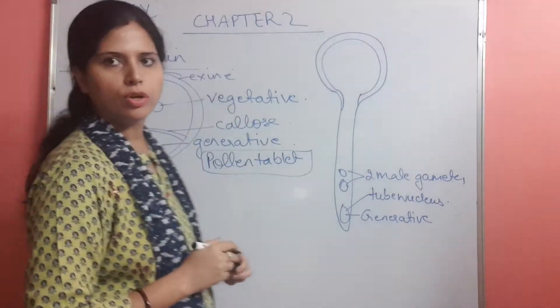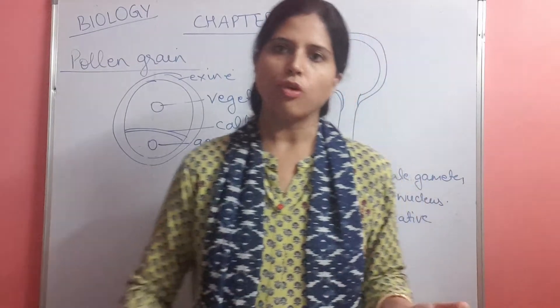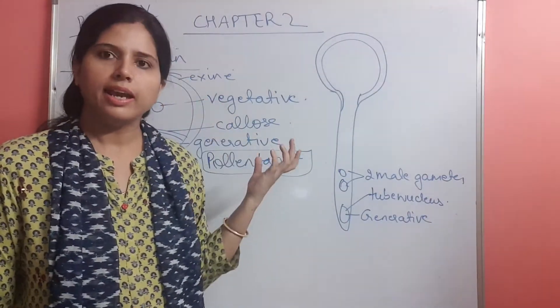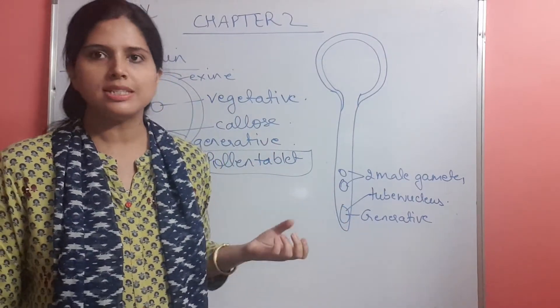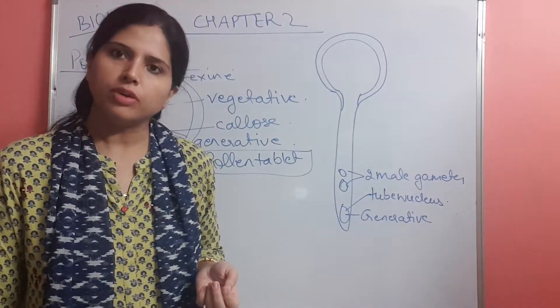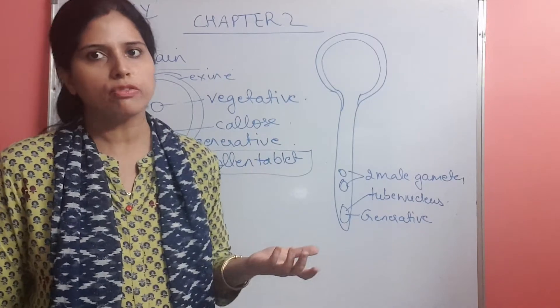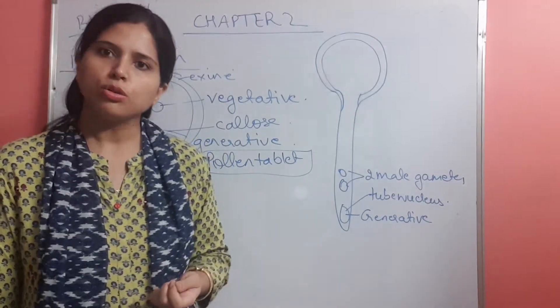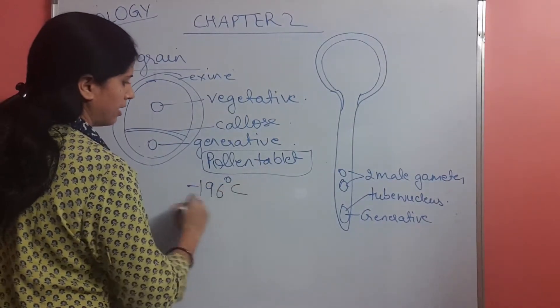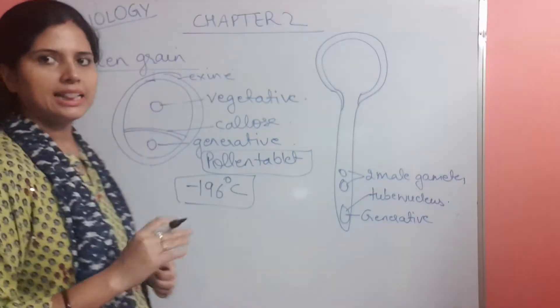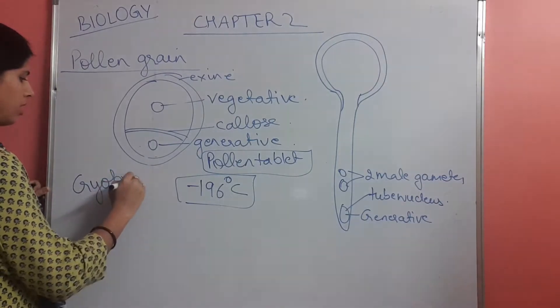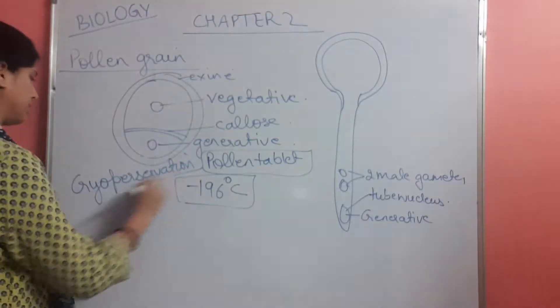Next, this pollen grain, for any species which is of better quality, superior quality, so for further fertilization, for production of better species, there can also be preserved at minus 196 degrees centigrade in liquid nitrogen, and this process is called as cryopreservation. Cryopreservation in liquid nitrogen, pollen grains are being preserved for many years.